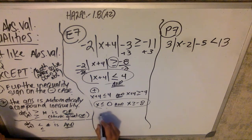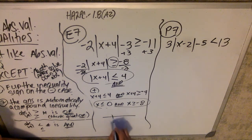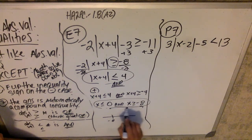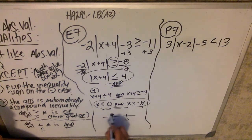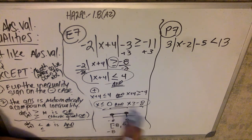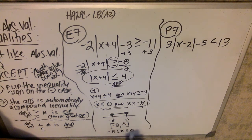On a number line, x greater than or equal to negative eight shades up from negative eight, and x less than or equal to zero shades down from zero. Since I want an 'and', it's the overlap — a solid dot at negative eight and a solid dot at zero with the middle shaded. In interval notation, that's bracket negative eight to zero bracket. As a chain: negative eight is less than or equal to x, which is less than or equal to zero.